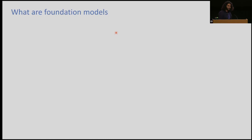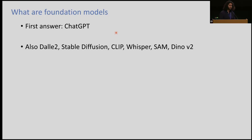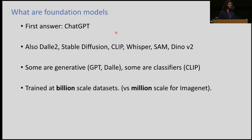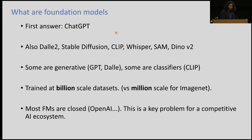So what are foundation models? This is in the context of machine learning. Usually you might say the first answer is ChatGPT — that's a foundation model everyone's familiar with — but there are many other types: DALL-E 2, Stable Diffusion for image generation, CLIP, Whisper, Segment Anything Model, DINOv2. Some of these are generative, some are classifiers. One big feature is that they're trained at billion-scale datasets as opposed to tens of thousands or millions. That's really where you start to see the benefit of these models on multiple tasks.